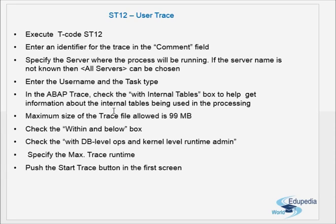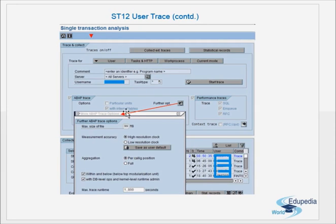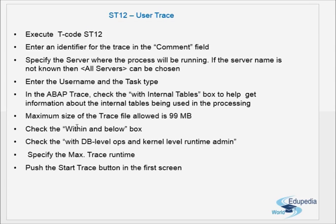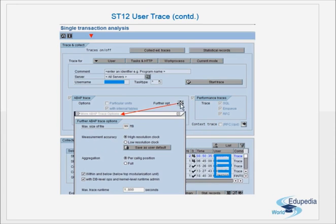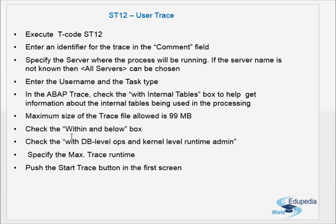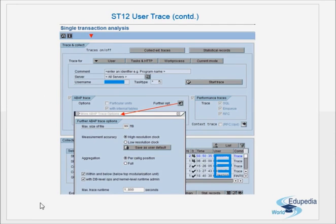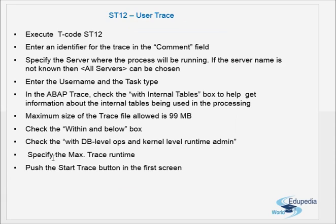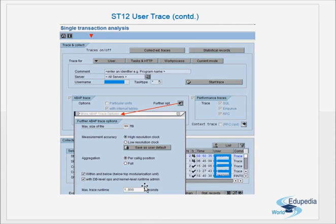In the further options, check the 'with internal tables' box to get information about the internal tables being used in processing. The maximum size of a single trace file allowed is 99 MB. Check the 'within and below' box and check the 'with database level kernel level' option. Also specify the maximum trace runtime, then push the Start Trace button. The runtime is generally limited to around 1000 or 2000 seconds.